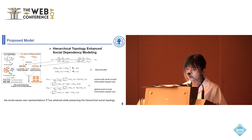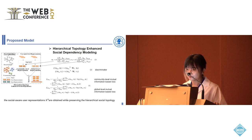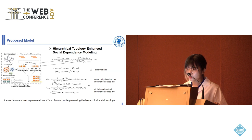To learn the hierarchical topology, we train a discriminator that distinguishes between positive samples and negative samples over the community-level and global-level representations. We design community-level mutual information-based loss L_MUC and global-level mutual information-based loss L_MUG. Hence, the social-aware user representations x* are obtained by preserving the hierarchical social topology.